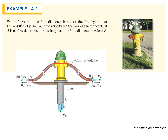Example 4.2: here we have a fire hydrant. We're going to look at the flow into the fire hydrant and out of the fire hydrant. We're told that water flows into a 6-inch diameter barrel of a fire hydrant at a velocity of 4 cubic feet per second at C, and it flows out at A and B. At A the diameter is 2 inches, and at B the diameter is 3 inches. We know the flow at A and we're going to find the discharge at B.